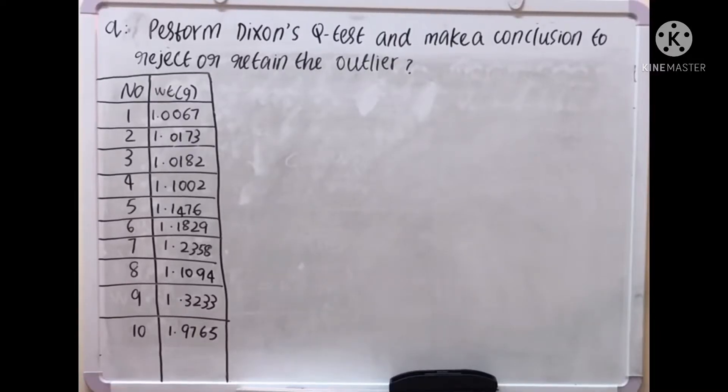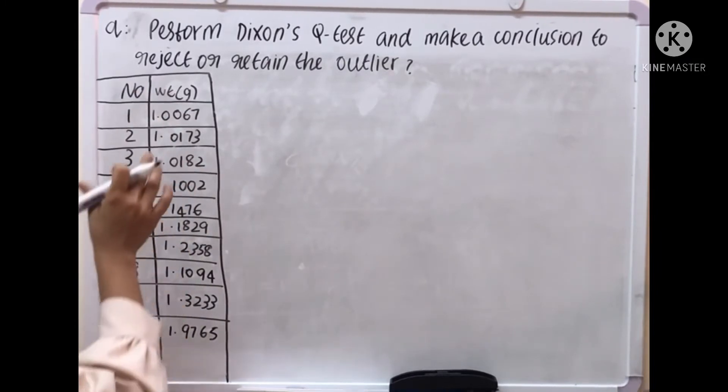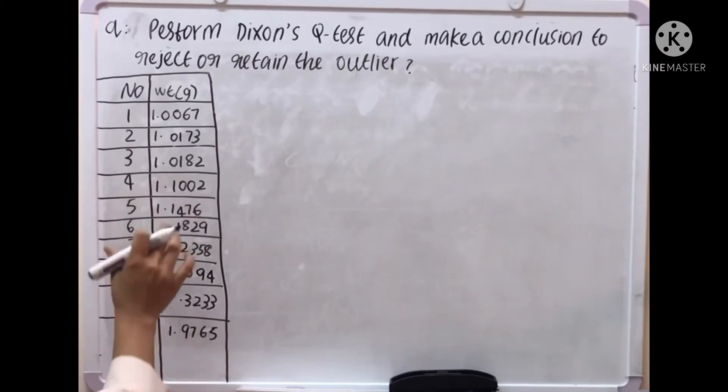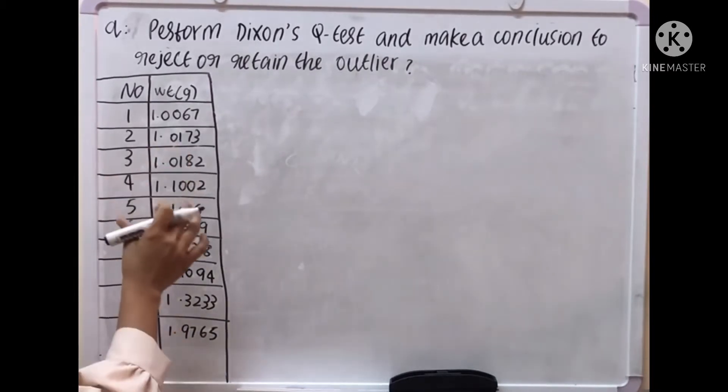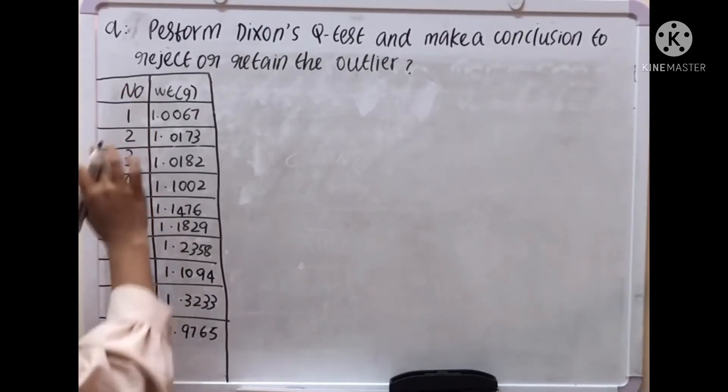Perform Dixon's Q test and make a conclusion to reject or retain the outlier. Here, number of samples are given and weight of the substances in grams is also given. Weight in grams, 10 numbers, 10 number of samples.